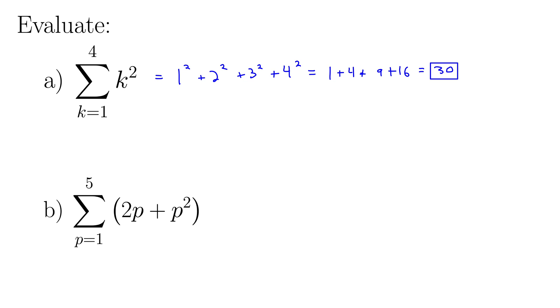Why don't you try b? We have the sum as p goes from 1 to 5 of the quantity 2p plus p squared. So pause the video, try it out, see what that evaluates to, and then we'll do it together. Did you get 85? I think that's what that should come to.